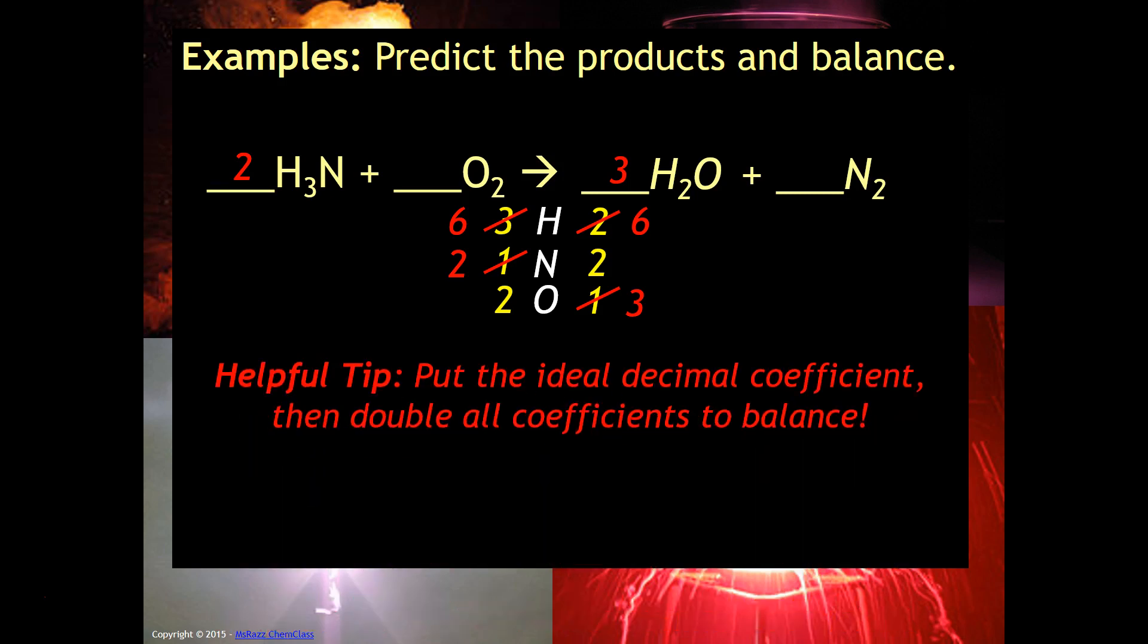Okay so now the last piece of this is I have to balance the oxygen. So that's why my helpful tip here is to put the ideal decimal coefficient, so basically put a decimal coefficient in front of the substance that you need in order to equal the number of oxygens that you need and then double all the coefficients. This works really well that way it doesn't modify everything that you've done thus far.